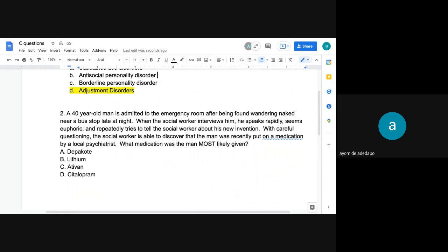Ativan is an anti-anxiety medication. And right now we don't see him having any kind of symptoms of anxiety. He looks like he's going through either a manic or hypomanic episode, depending on the length, right? When we know the difference between hypomanic and manic depends on the length of the episode. So we don't know. It's just giving us one day. We don't know how long this episode is going to last for. So C is not the correct answer.